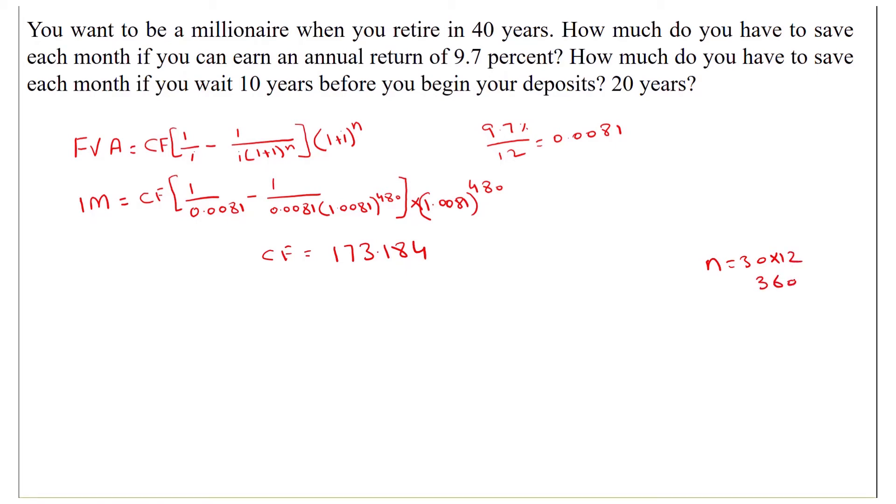The remaining things will be the same. So our future value of annuity will be 1 million, equal to cash flow that we will calculate: 1 divided by 0.008 minus 0.008 times 1.0081 raised to power 360. And the cash flows will be 471.515.